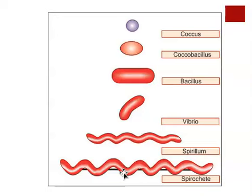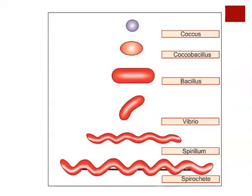An example of a spirochete is the organism called Borrelia burgdorferi — the bacterium that causes Lyme disease. The spirillum, in comparison, has fewer twists and is a less flexible type of cell. For example, the Campylobacter organism, which is known to cause some types of food poisoning, has the spirillum shape.